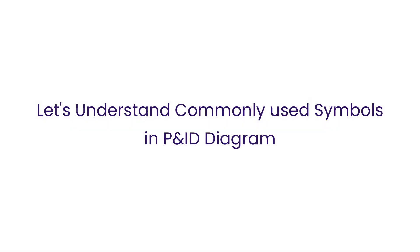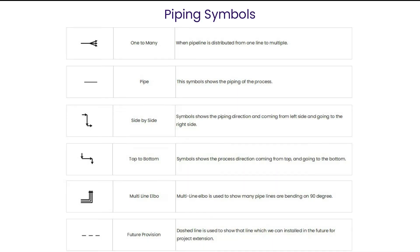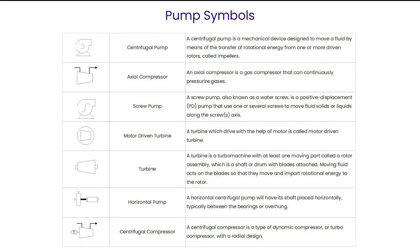Let's understand some commonly used symbols in the PID diagram. These are the piping symbols which are used to draw the piping line in a PID diagram of any process plant. These are the pump and compressor symbols. Pumps and compressors have many types of symbols, like centrifugal, reciprocating, screw, etc. These are designed to move any fluids or gases.